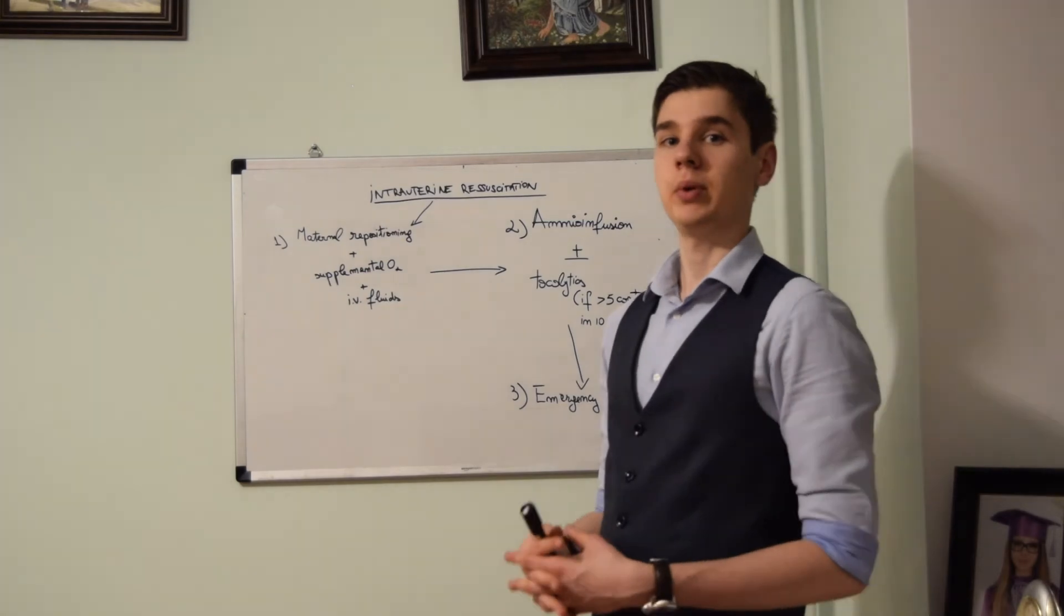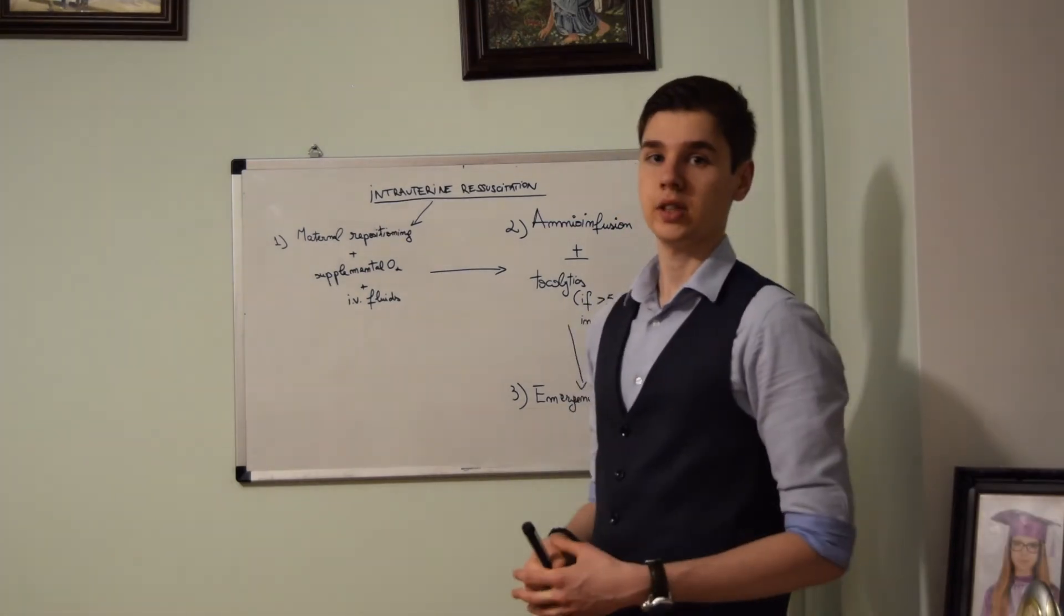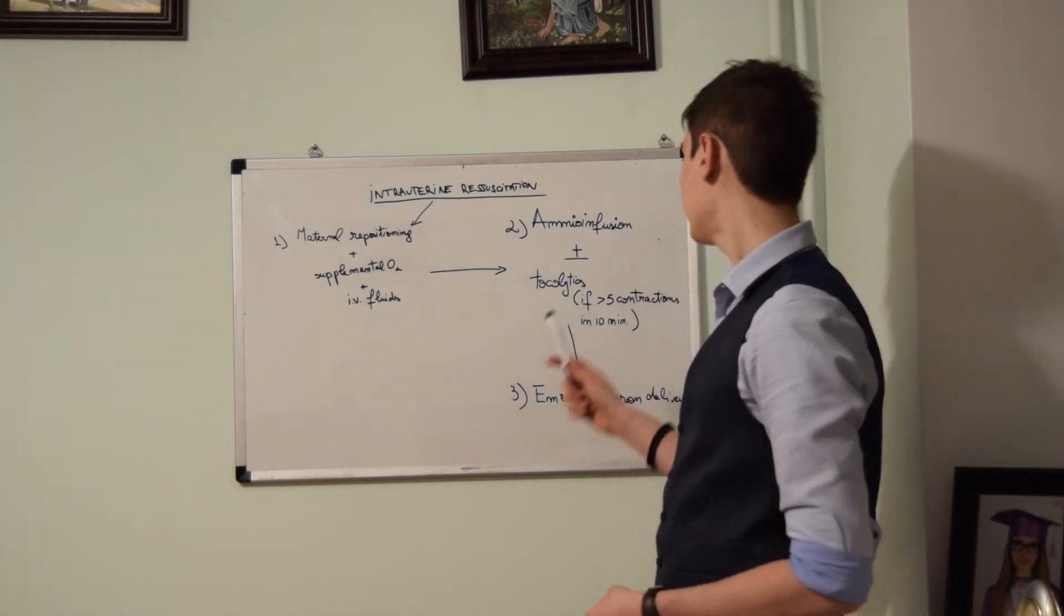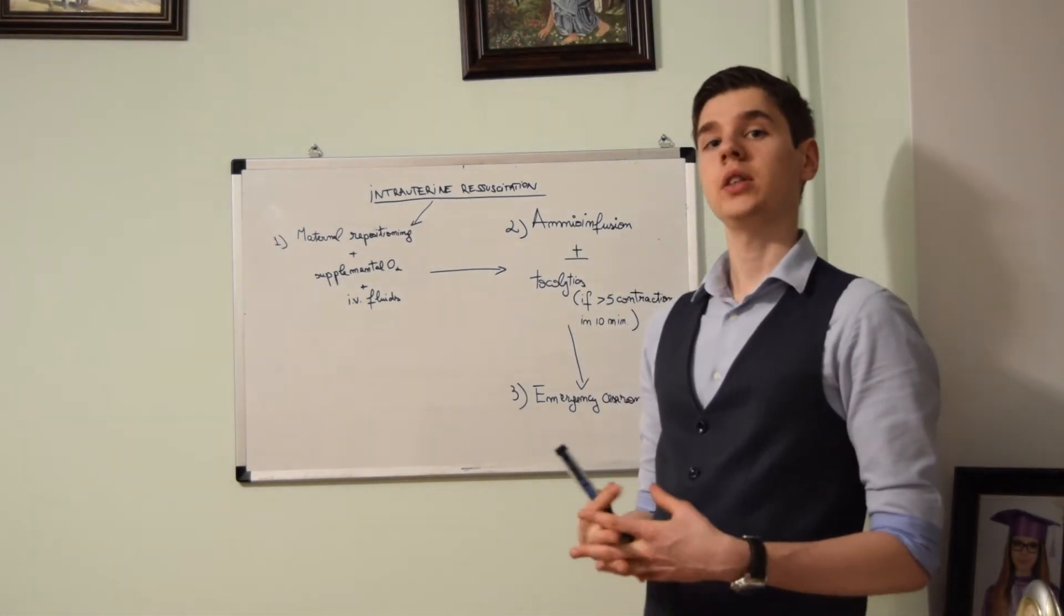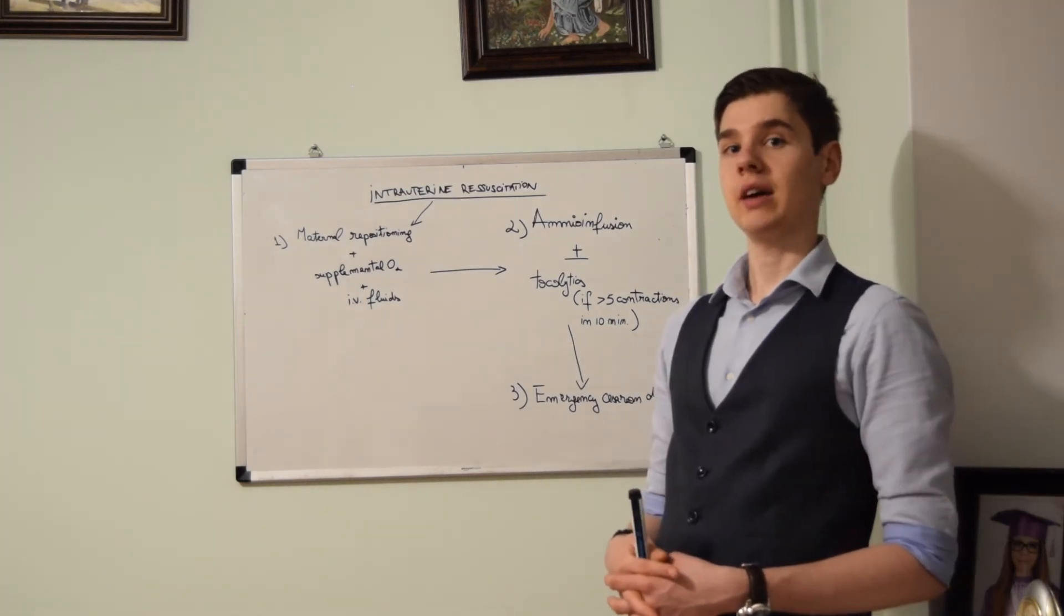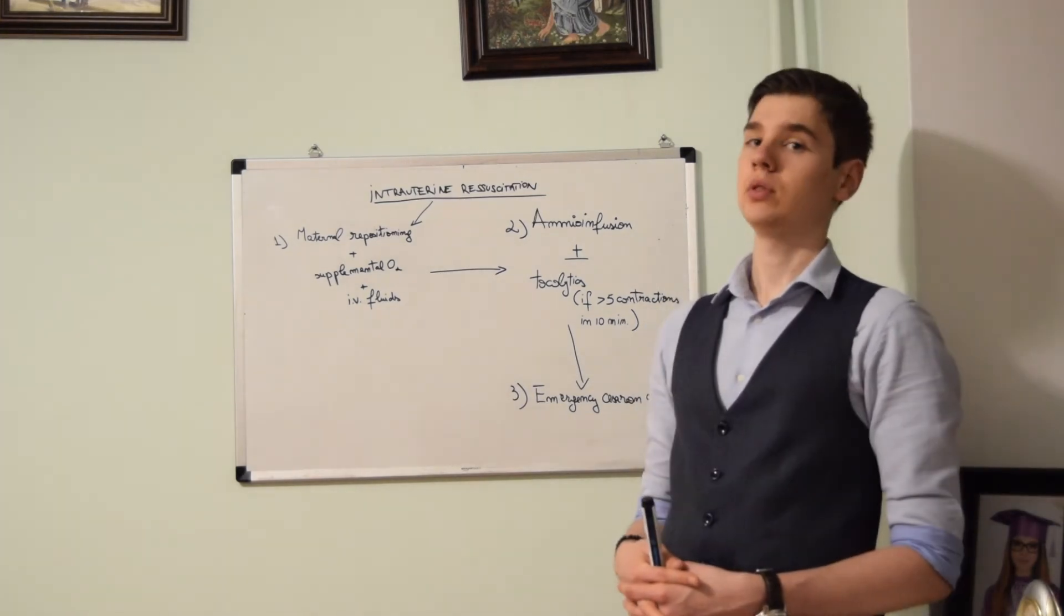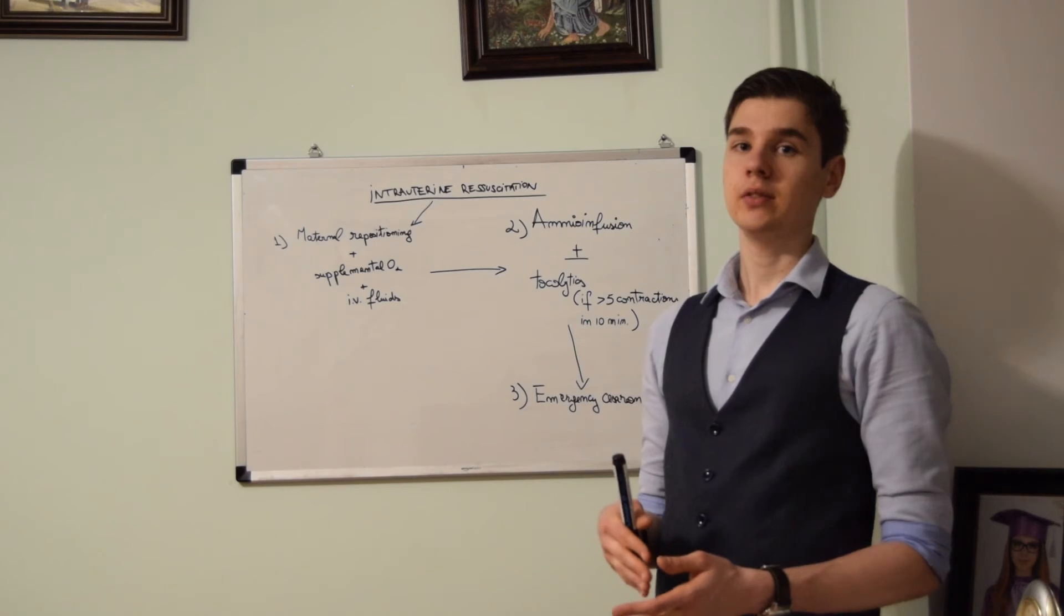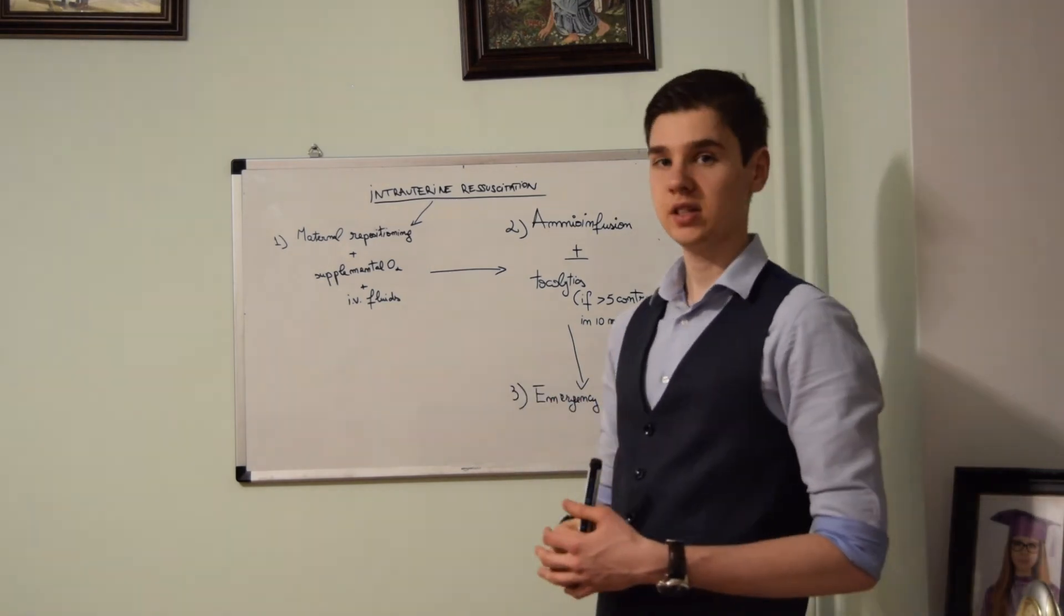If by this time the patient is not stabilized, we will proceed further. This process consists of amnioinfusion. Amnioinfusion consists of introducing saline into the amniotic cavity. Thus, the compression of the umbilical cord is reduced. This objective is also common with the previous step.